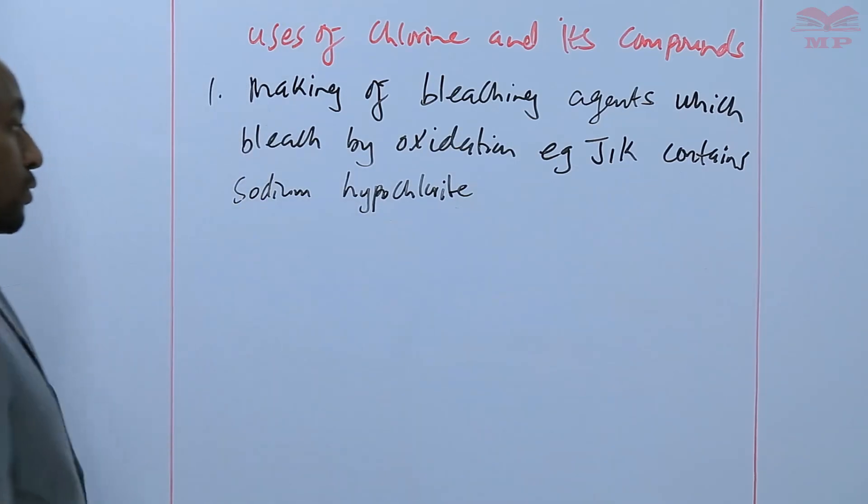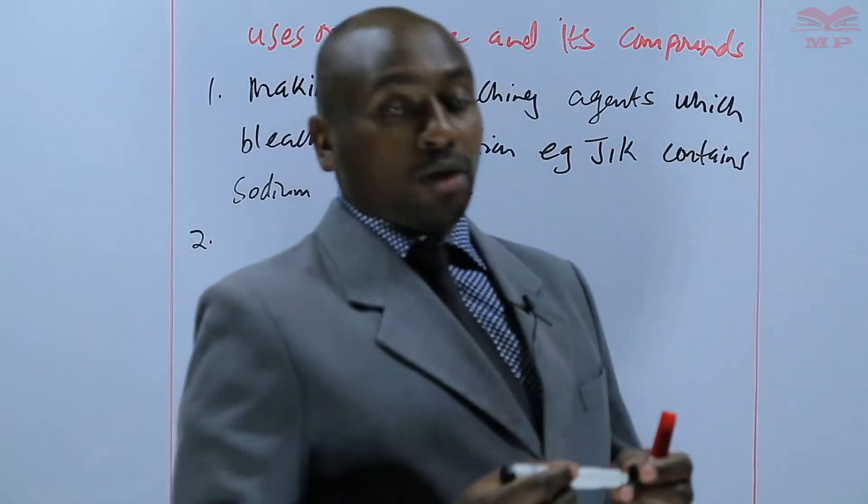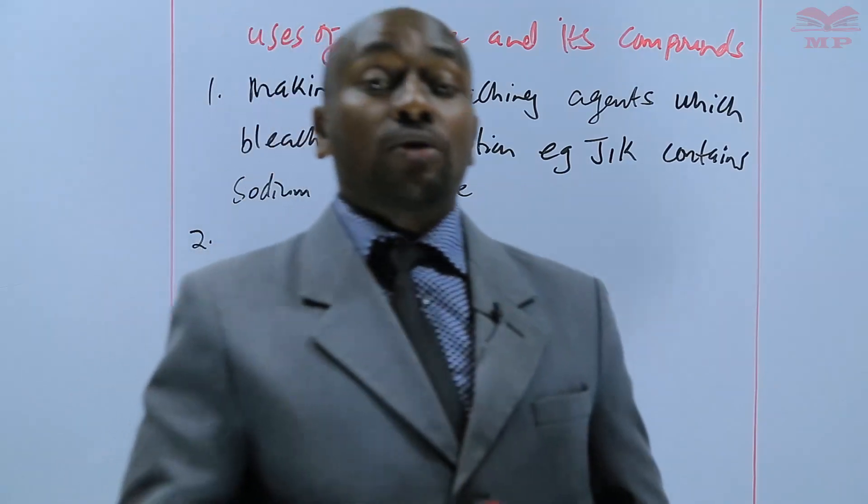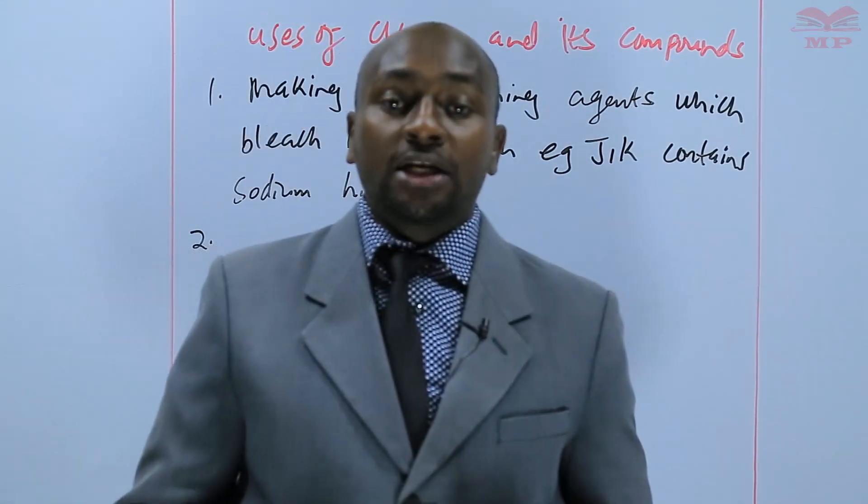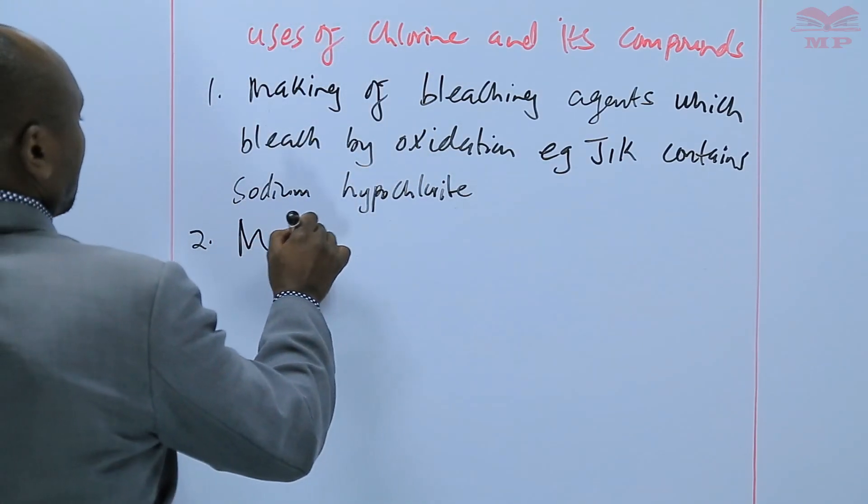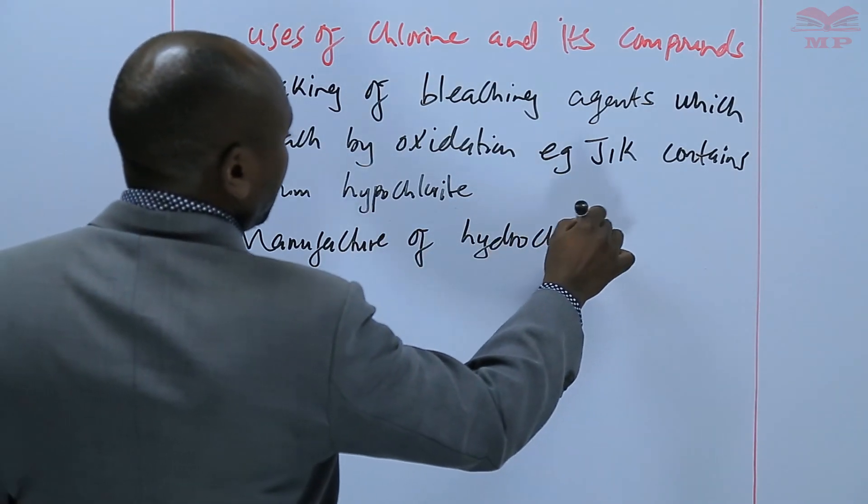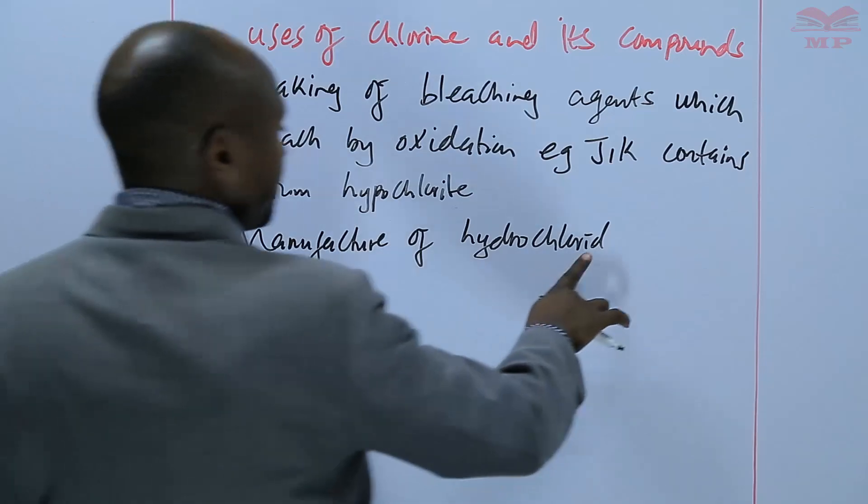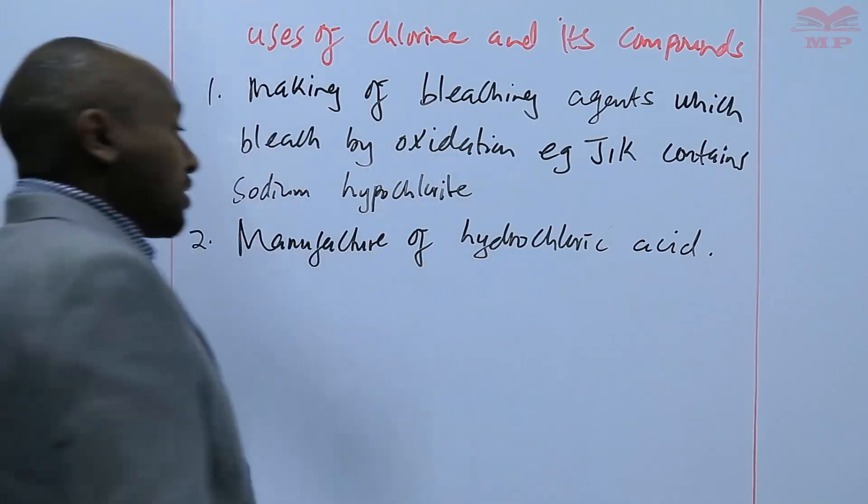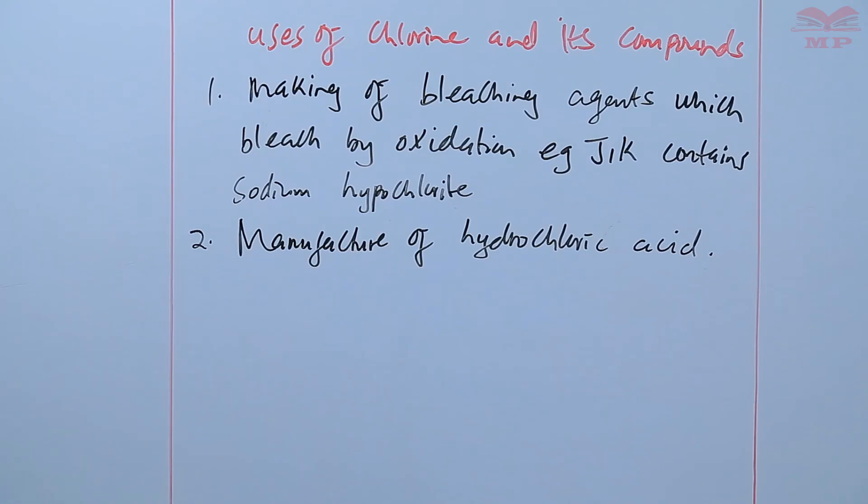Number two, we also saw that when chlorine is dissolved in water, it forms hydrochloric acid. So chlorine is used in the manufacture of hydrochloric acid. During the large-scale manufacture of hydrochloric acid that we shall discuss later, chlorine is used as one of the raw materials.